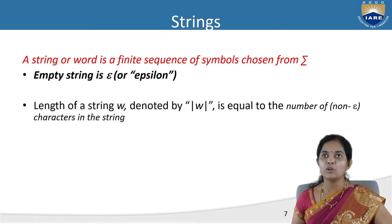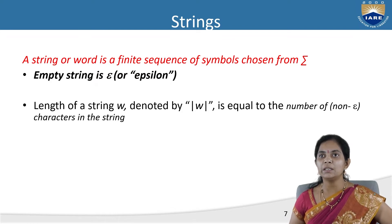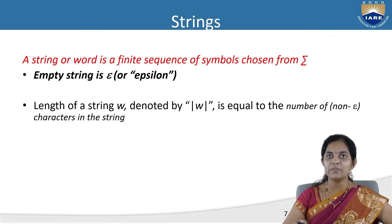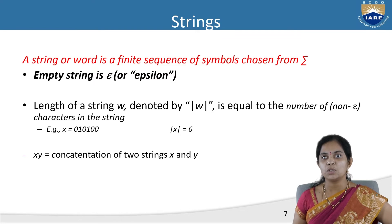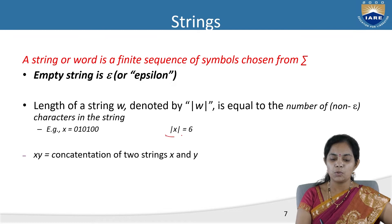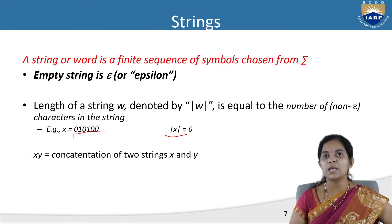The length of a string w is denoted by two vertical bars |w|. For example, if x = 010100, the length |x| = 6, since we have six 0s and 1s. We can also perform concatenation of two strings x and y — if x has length 4 and y has length 3, we can concatenate both strings in one operation.